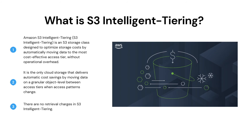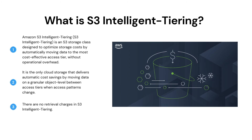Our next question is: what is S3 Intelligent Tiering? Amazon S3 Intelligent Tiering is an S3 storage class designed to optimize storage cost by automatically moving data to the most cost-effective access tier, without operational overhead. It is the only cloud storage that delivers automatic cost saving by moving data on a granular object level between access tiers when access patterns change. This is the perfect storage class when you want to optimize storage cost for data that has unknown or changing access patterns. S3 Intelligent Tiering monitors the access pattern and moves the object automatically from one tier to another. If an object in the infrequent access tier is accessed later, it is automatically moved back to the frequent access tier. No additional tiering charges apply when objects are moved between access tiers within the S3 Intelligent Tiering storage class.